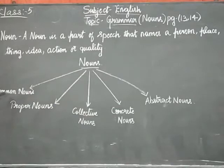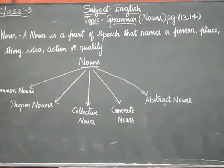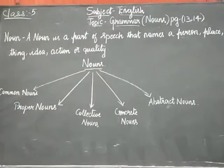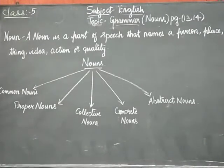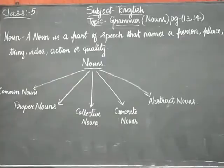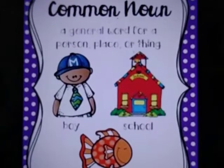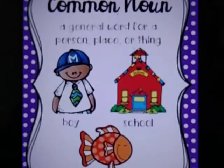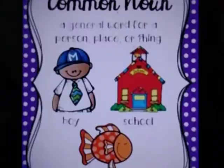First of all, what do you mean by common nouns? Open your page number 13. A common noun is a name given to every person, place, animal and thing of the same kind. For example, here it is a boy — they are not specifying which boy, it is just a common boy, so it is a common noun. Next, school — they are not specifying which school, so it is a common noun. Next, a fish — also a common noun.